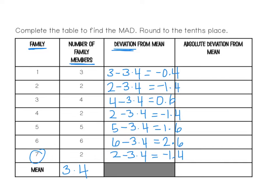Once we have all of these numbers, the absolute deviation means that the number cannot be negative — we can't have a negative value. So I'm simply going to take away the negative sign from these numbers.